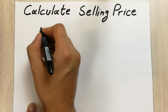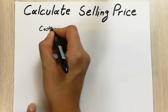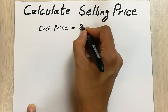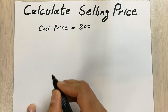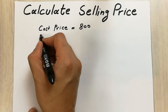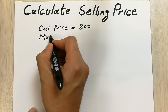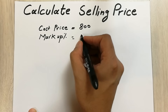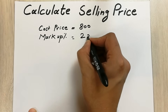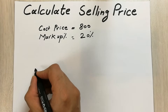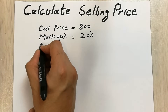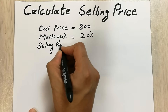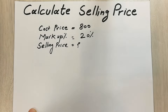First of all, if you have a product and the cost price of that product is 800 dollars, and you also have the markup percentage, which is 20%, and now you want to calculate the selling price.